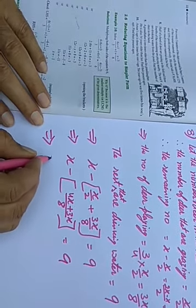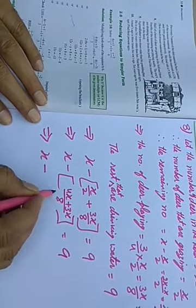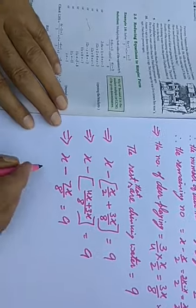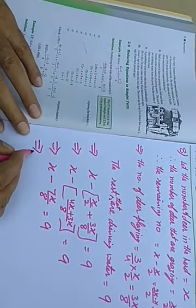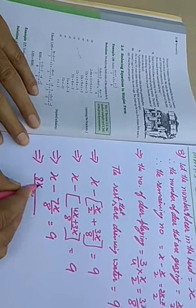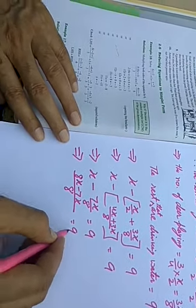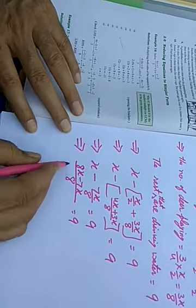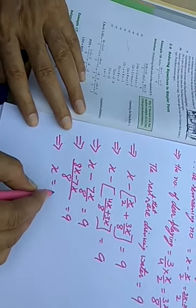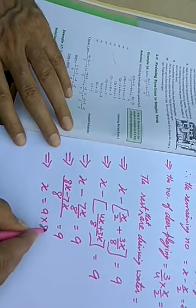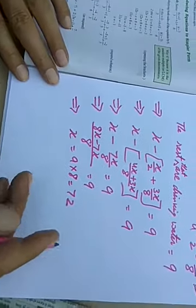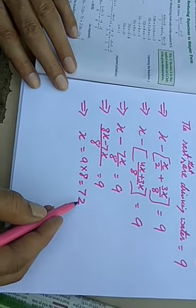We have X minus seven X upon eight is equal to nine. The LCM is again eight, so eight X minus seven X upon eight gives us X upon eight equals nine. This gives you X is equal to nine multiplied by eight, which is seventy-two. So the value of X is seventy-two.